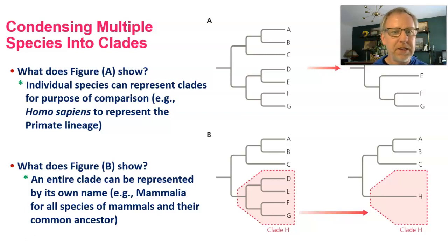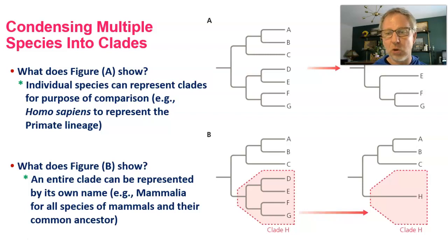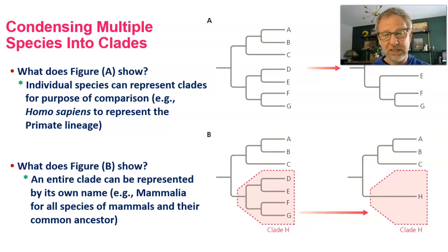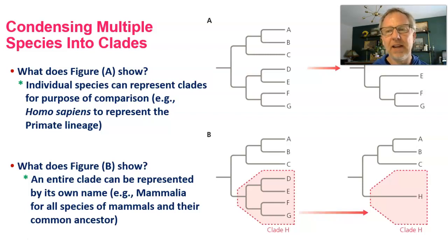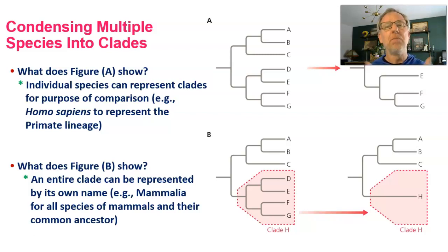Figure B shows that we might collapse all the species in a clade into one lineage and just name that whole clade — a way of simplifying and stepping back to show the bigger picture. So instead of showing all of species D, E, F, and G, we would collapse them and just name that whole clade. These are different ways to represent cladograms depending on what we want to communicate to others.